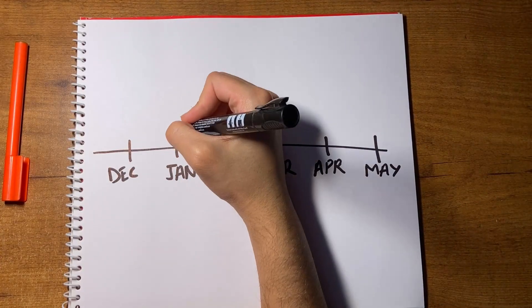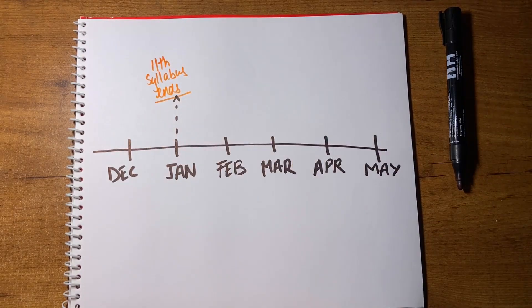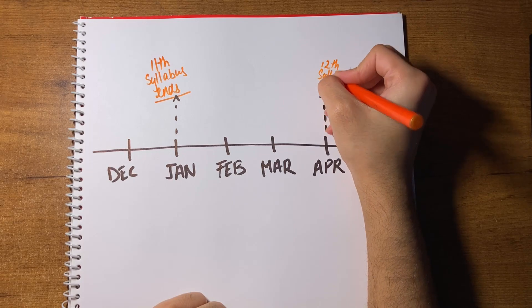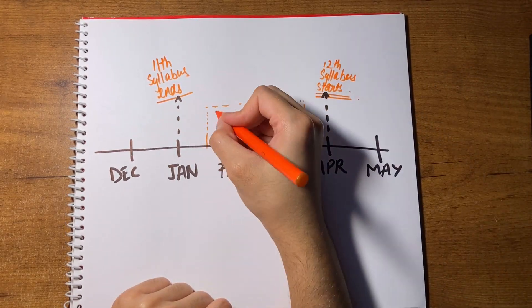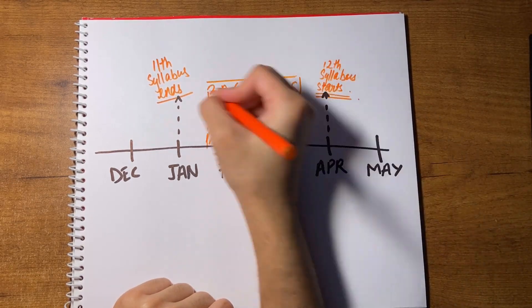It's important to complete your backlogs slowly along with the chapter you're currently studying — on your off days, spare days, or any free time from coaching. Alternatively, if you have a really large backlog like I did, you can use the two-month gap between when coaching ends around January and 12th starts around April. You can choose to not focus on school exams as much during that time and instead focus on completely erasing your backlog. You'll be surprised at how much you can cover when you have the entire day free to study.